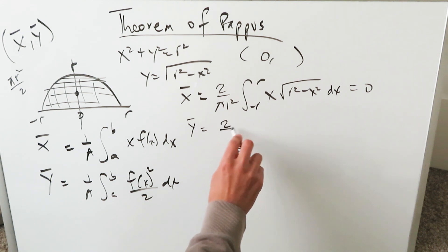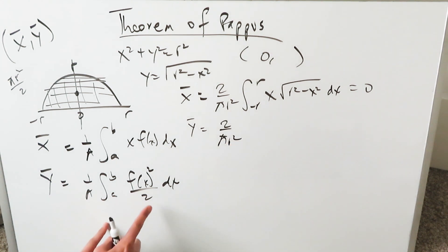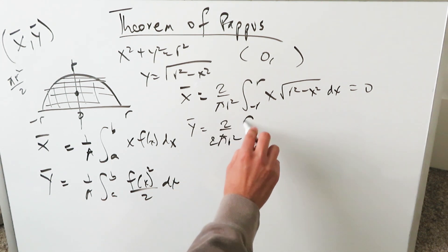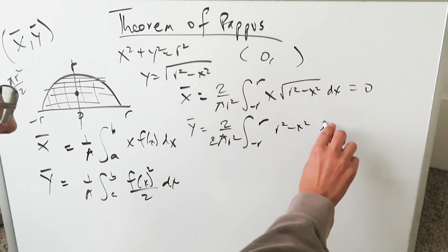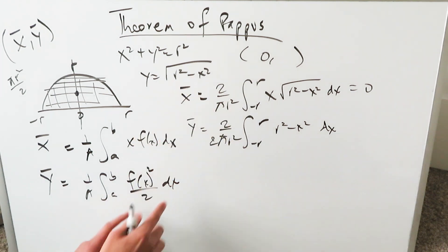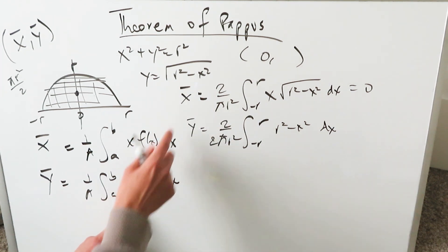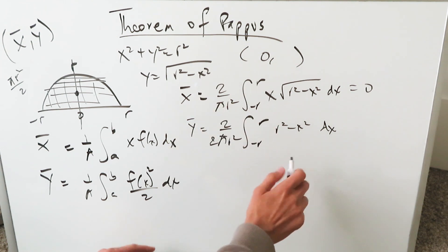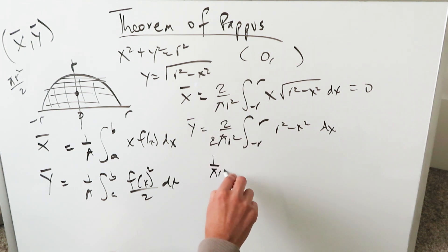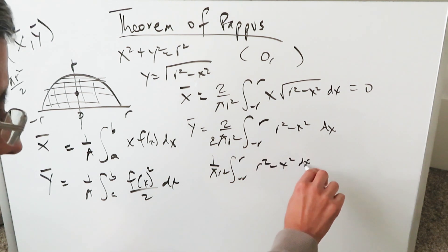Now, the ȳ value will be 2/(πr²). You have this 2, you can bring it out here. You'll have -r to r, this function, r² - x² dx. Why am I doing this function? Because there's a square here. The square of this radical eliminates the root, the radical, and you're just left with that. You have 1/(πr²) ∫[-r to r] (r² - x²) dx. Integrate this.